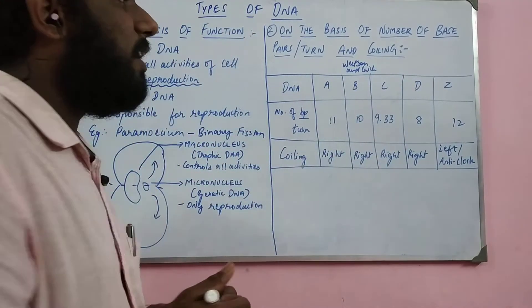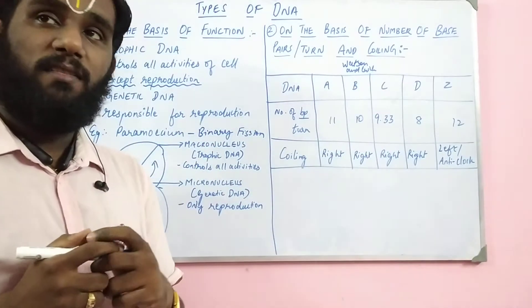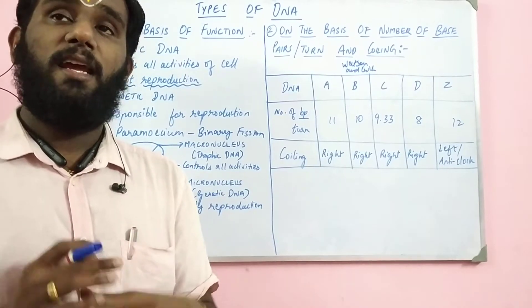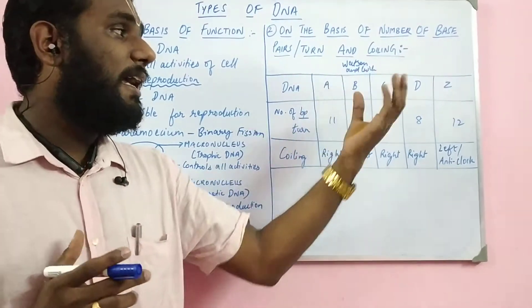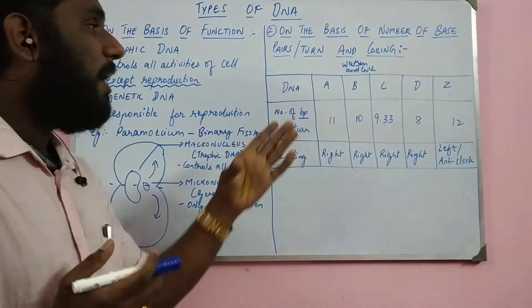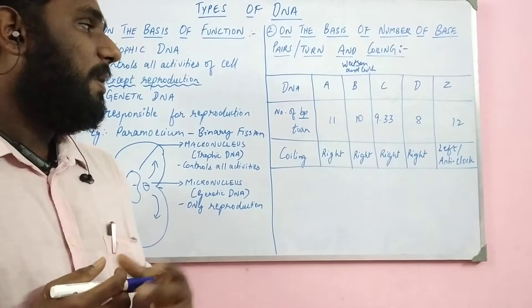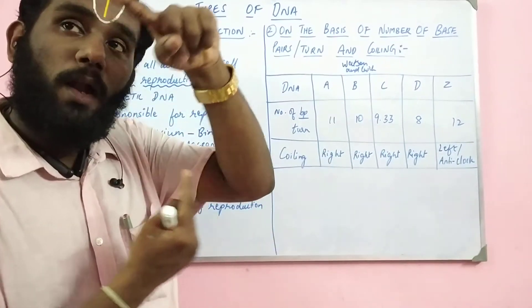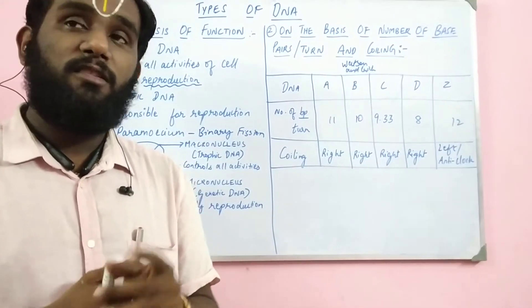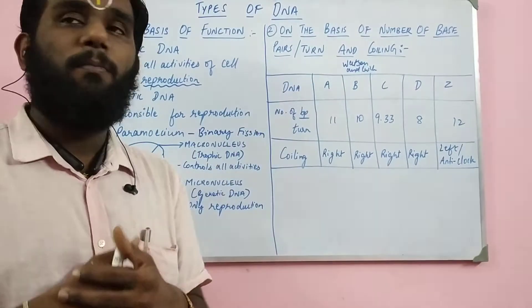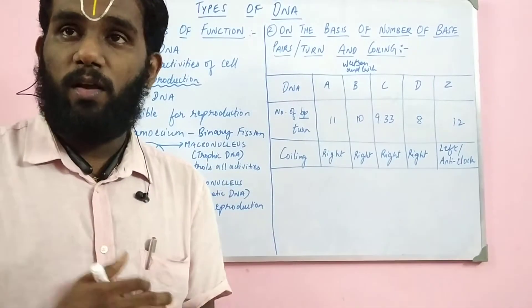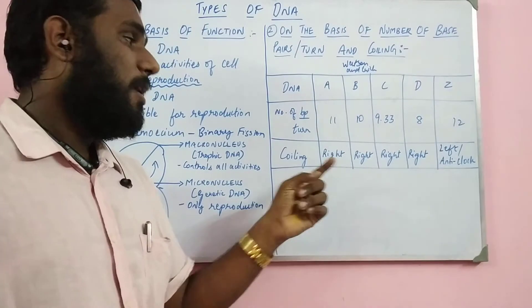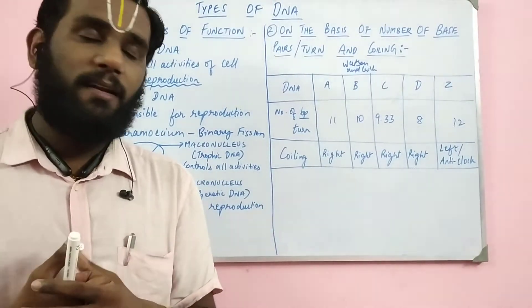Apart from B-DNA, there are other models as well: A-DNA, B-DNA, C-DNA, D-DNA, and Z-DNA. As per A-DNA, there are 11 base pairs in one turn, and the coiling is always on the right. B-DNA, which we already know and have seen in a separate video, consists of 10 base pairs per turn, and the coiling is also on the right.